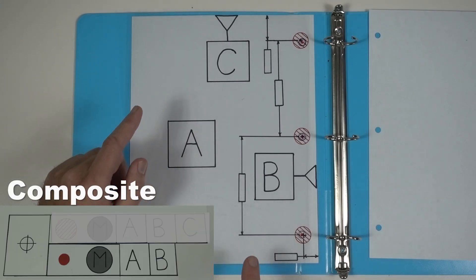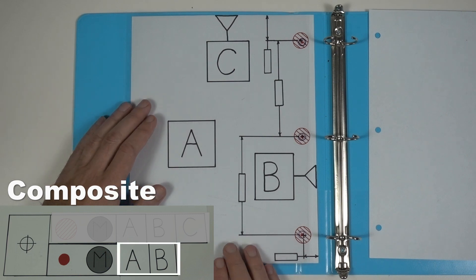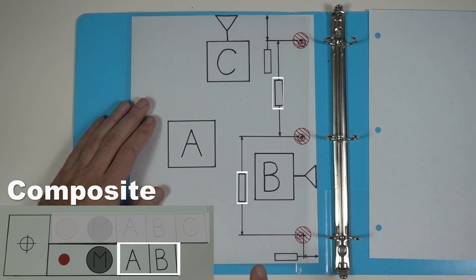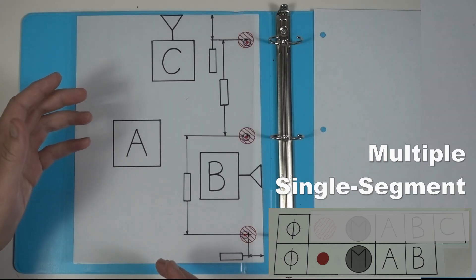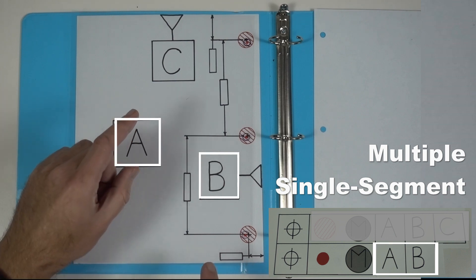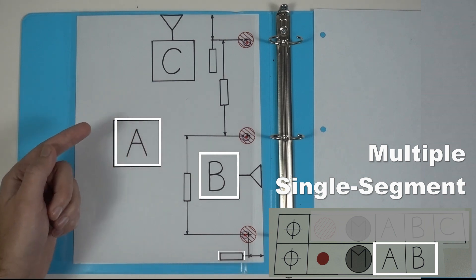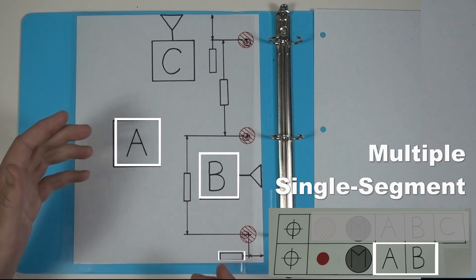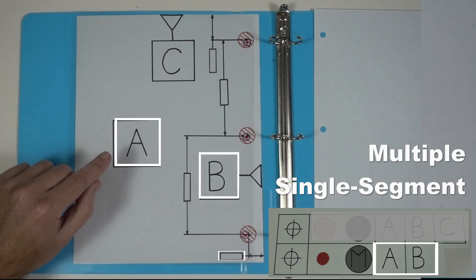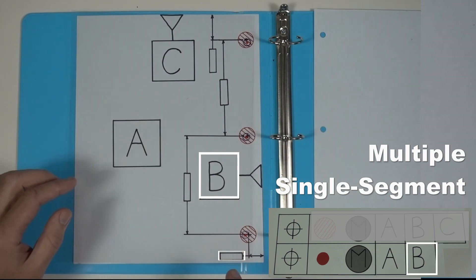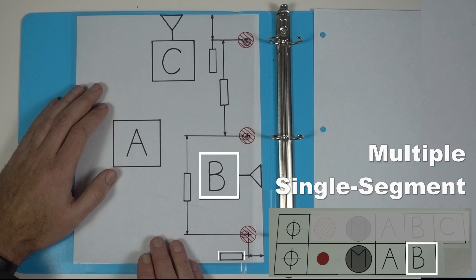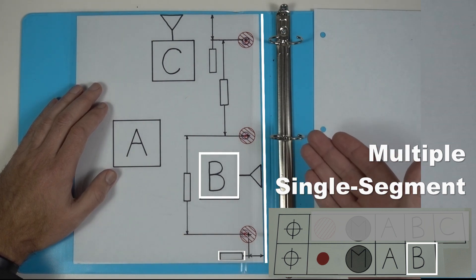Using composite, any datums in the lower segment only control rotation of the pattern of features. The only basic dimensions that matter are the ones between the holes. But if we use multiple single segment, any datum that's added switches the basic dimensions back to that datum. In this case, datum A is the surface of the paper so it doesn't have a basic dimension.